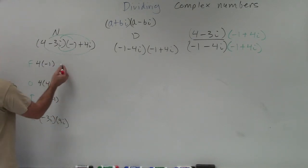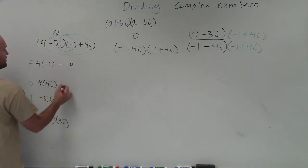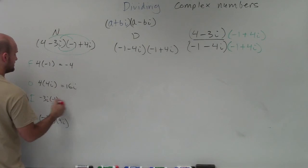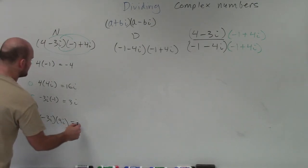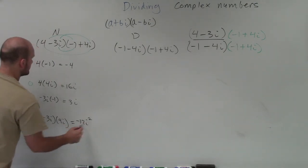Then I just multiply these out. So this equals negative 4. This equals 16i. This equals a positive 3i. And this equals a negative 3 times 4, which is a negative 12i squared.